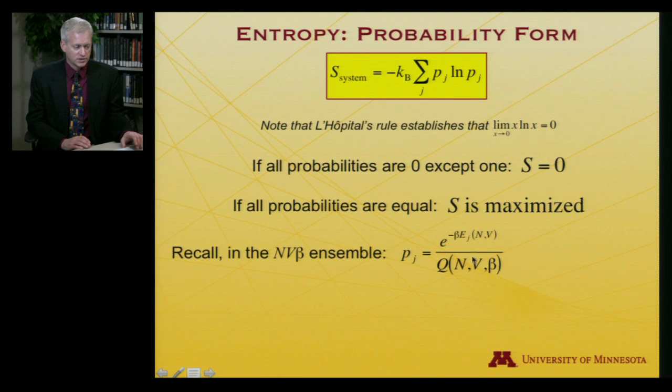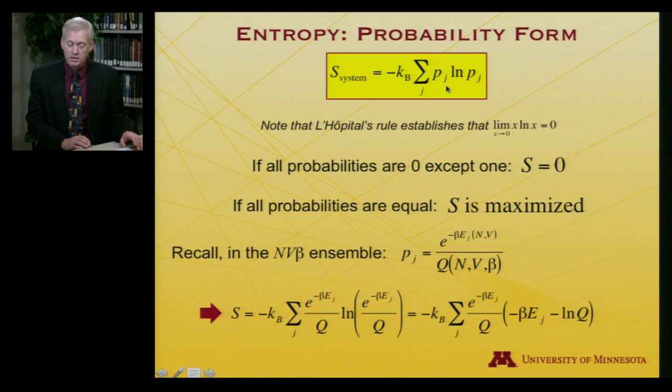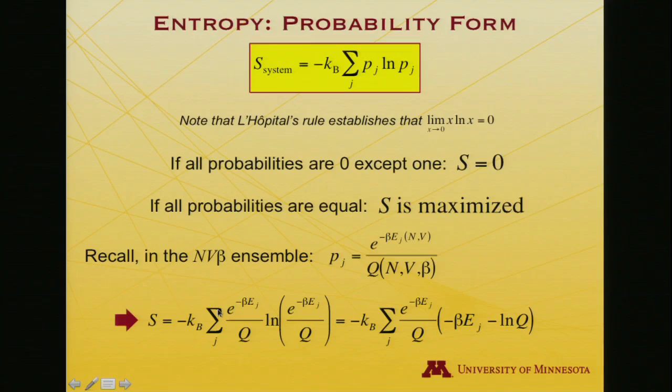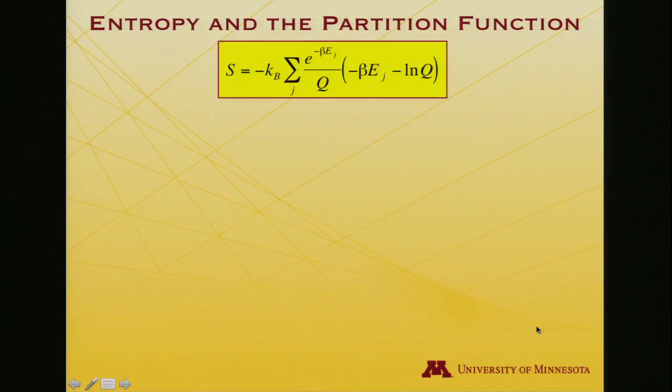And so if I now swap that in for p, I get entropy is equal to minus Boltzmann's constant, sum over j, here's my probability, here's the log of my probability, and this is a log of a quotient, so I'll take a difference of logs. So I get minus kb, here's this prefactor term, log of an exponential, that just annihilates both those functions, I'm just left with the argument of the exponential, minus beta e sub j. And then meanwhile, I've got a minus log q here, minus log q.